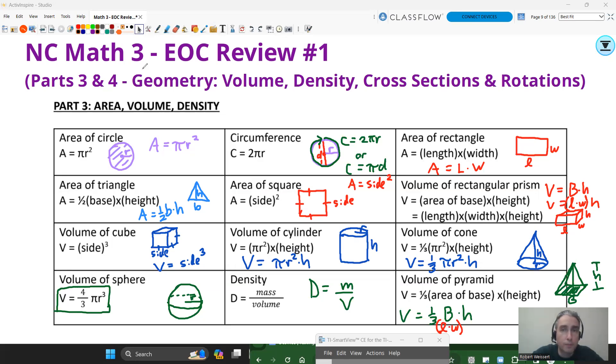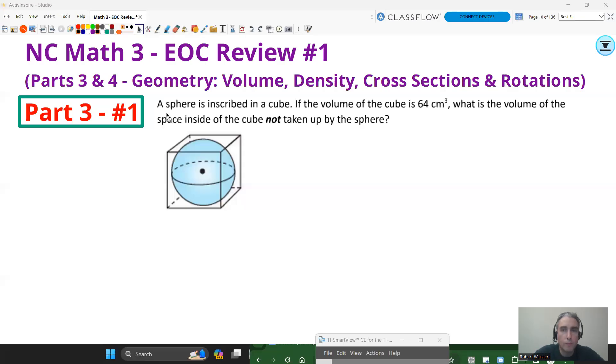Let's get going. Our first question is dealing with a sphere in a cube. The question says, a sphere is inscribed in a cube. If the volume of the cube is 64 cubic centimeters, what is the volume of the space inside the cube not taken up by the sphere? Keyword: not taken up. This is question number one on part three.